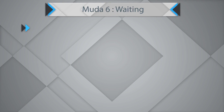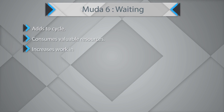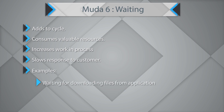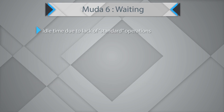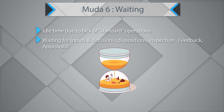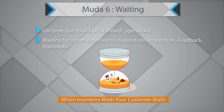The sixth waste is waiting. Waiting shall always add to cycle time, consumes valuable resources, increases the work in progress, and slows down your response to the customer. Examples include waiting for downloading files from an application, waiting for peer reviews, idle time due to lack of standard operations, or waiting for inputs and decisions. Waiting is hazardous — when inventory waits, your customer waits.